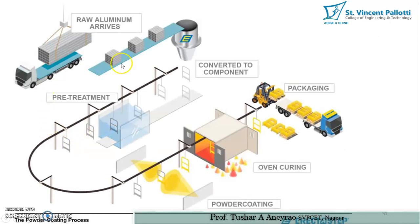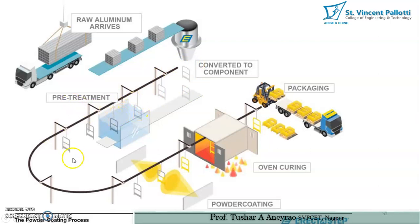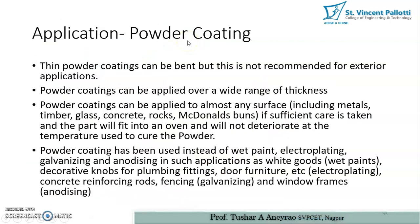This is the standard floor plan in which powder coating is performed. The raw aluminum material arrives and is fed through a belt conveyor to an overhead conveyor where the parts are hanged. Then pretreatment is carried out, followed by powder coating, oven curing, and finally packaging and dispatching. Thin powder coatings can be bent, but this is not recommended for exterior applications — bending of powder-coated material is not at all desirable.